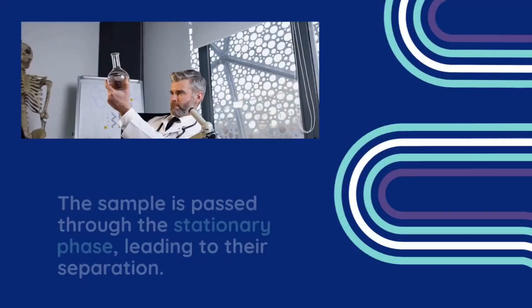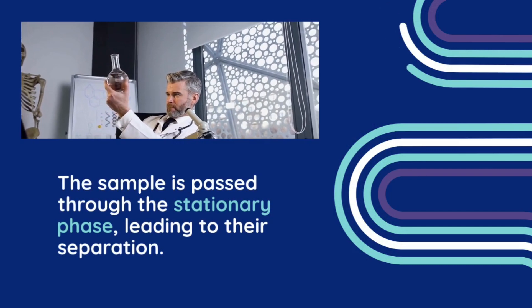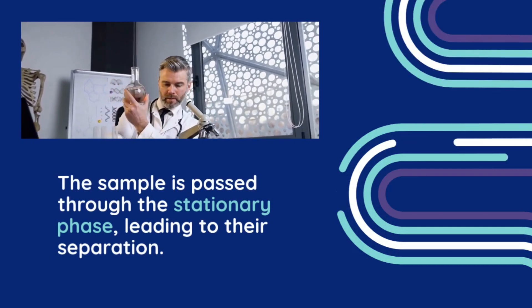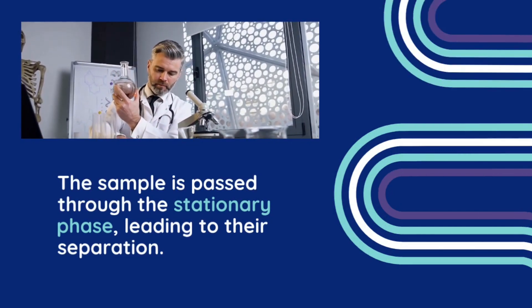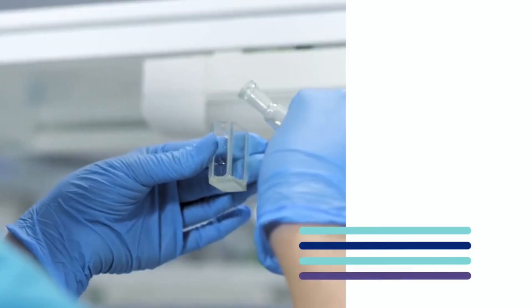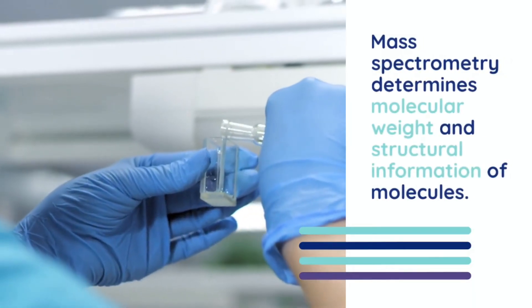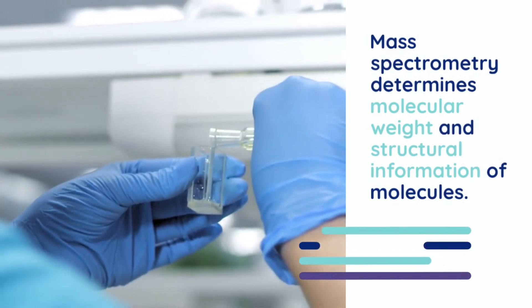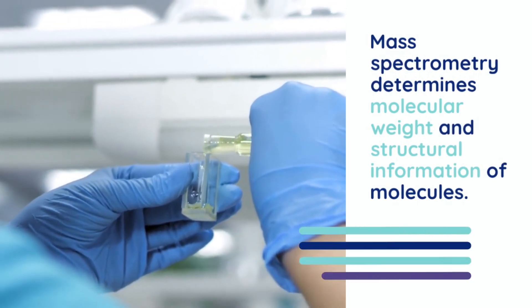Mass spectrometry (MS) is a technique used to determine the molecular weight and structural information of molecules. It involves the ionization of analyte molecules to form charged ions, which are then separated based on their mass-to-charge ratio (m/z) and detected by a mass analyzer.